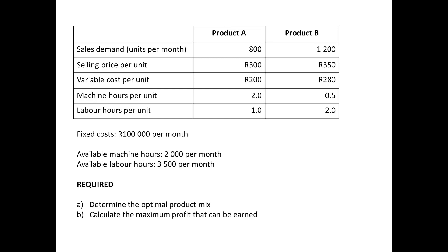The question asks: determine the optimal product mix and calculate the maximum profit that can be earned. When you hear the words 'optimal product mix,' you know this is a limiting factor question. Optimal product mix means we need to calculate how many units of A and how many units of B we're going to sell — then what the profit will be at those units. If there are no constraints, we will sell 800 of A and 1,200 of B — our full sales demand — because we'll sell as many units as we can up to what customers want to buy.